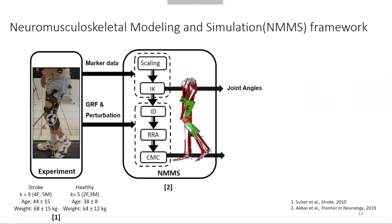First, we condensed the head, arms and trunk bodies into a pelvis body segment in the model since there were no markers on those bodies during the experiment. Then we scaled the weight and body segments of the Gait2392 model for each subject, and calculated the joint angles using the inverse kinematics tool. Then we applied the Residual Reduction Algorithm, or RRA, and made adjustments to verify the dynamic consistency of the simulation. RRA is a gait-specific tool which runs forward dynamics by equalizing the equations of motion from body segments and experimentally measured external forces.